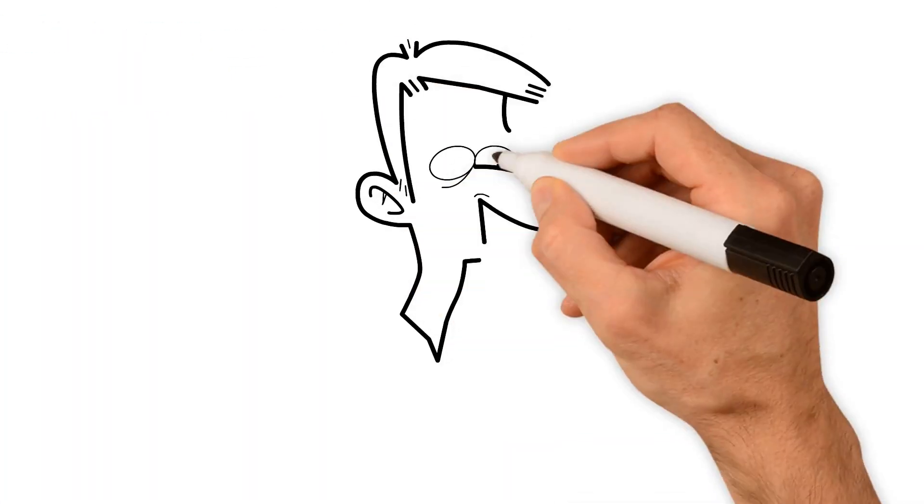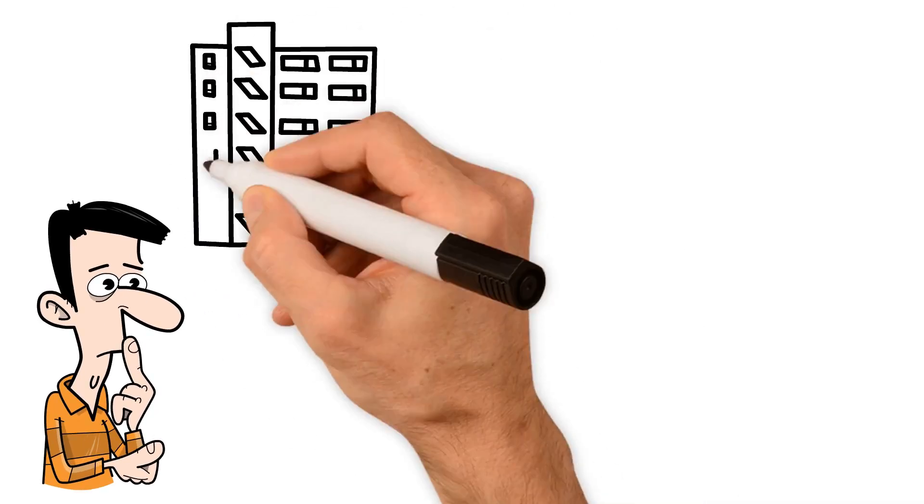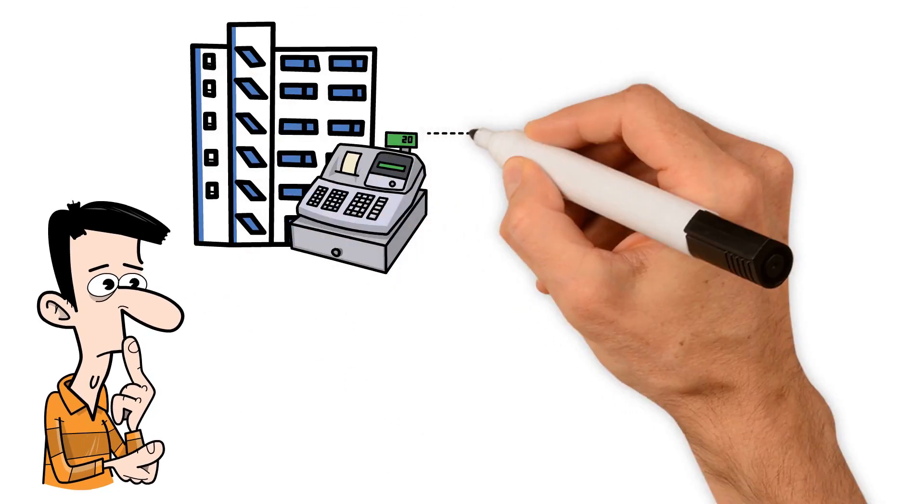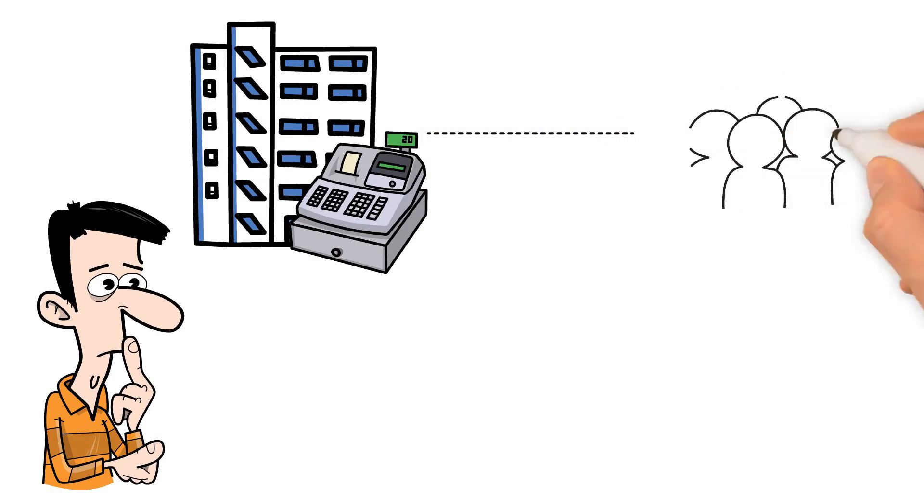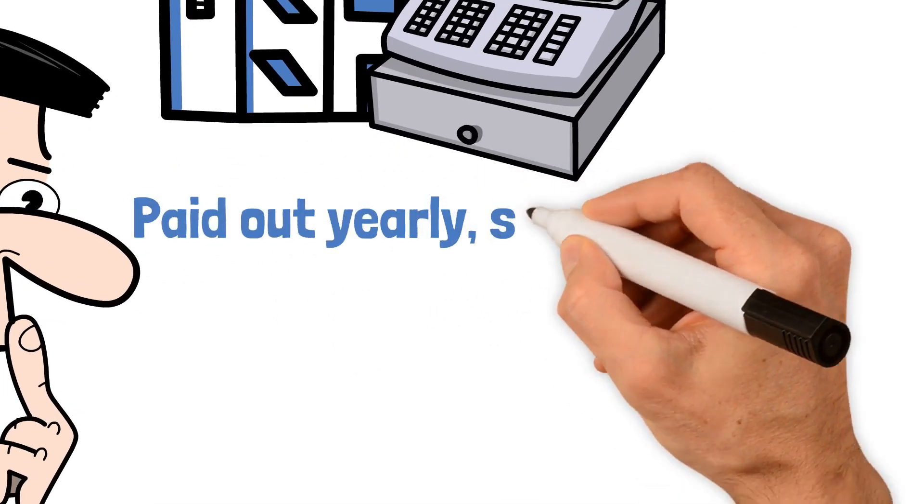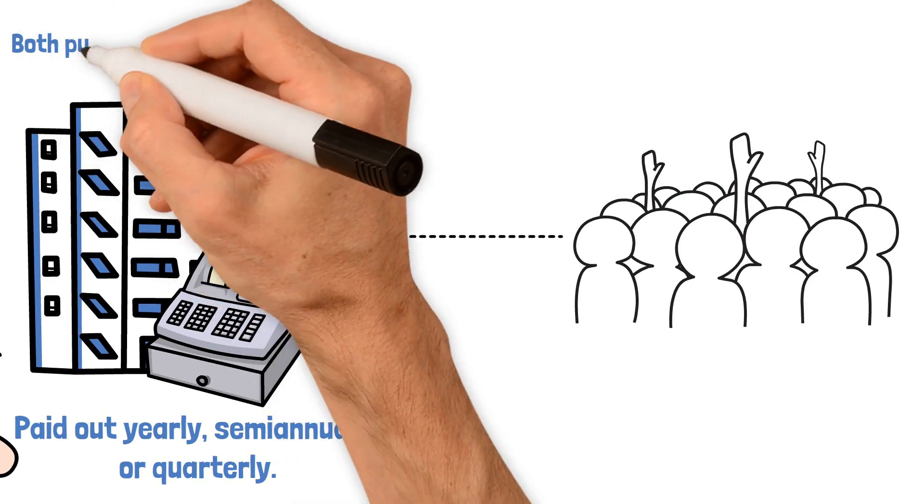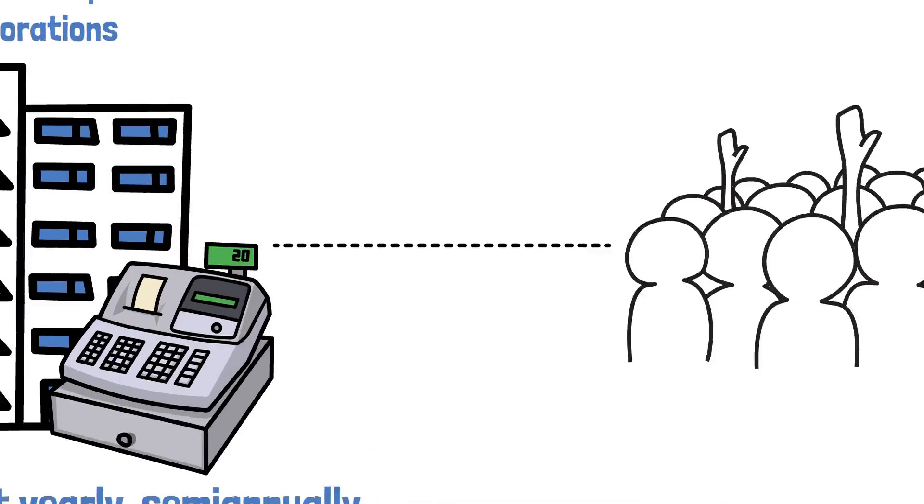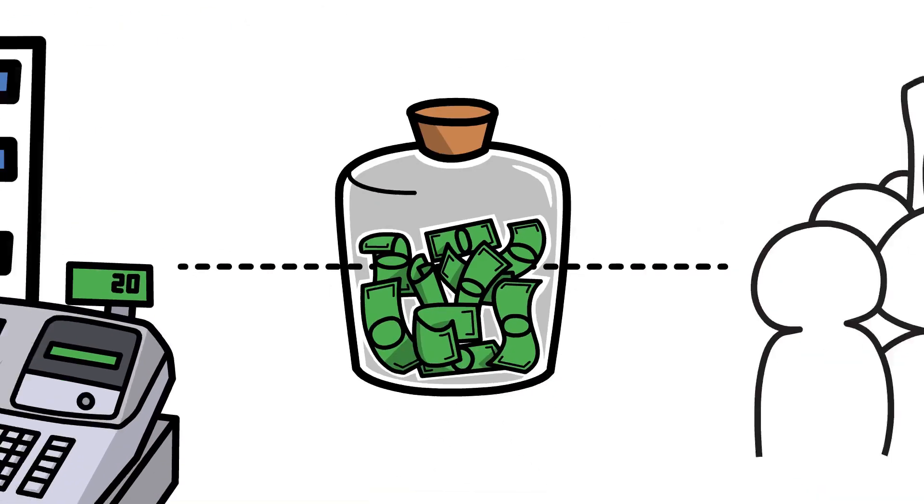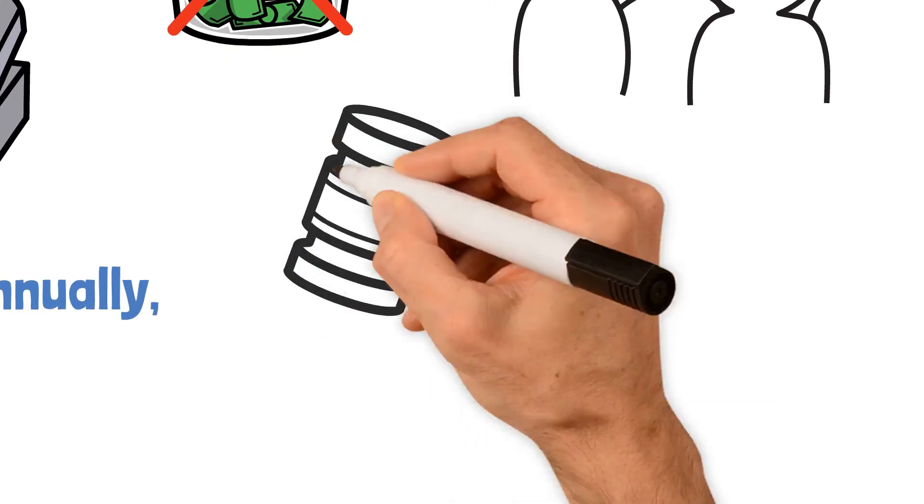For those who might be new to the financial jargon, in the most basic form, dividends are a percentage of a company's earnings delivered to the shareholders meeting certain requirements. They are eligible to pay out yearly, semi-annually, or quarterly. However, it's important to remember that both public and private corporations can pay dividends, but not all companies do so. It's not part of their required legal obligation.